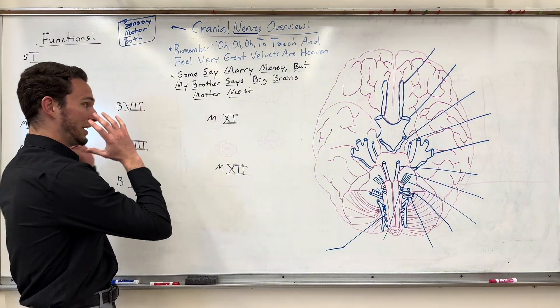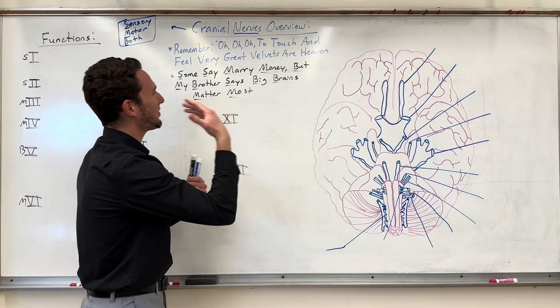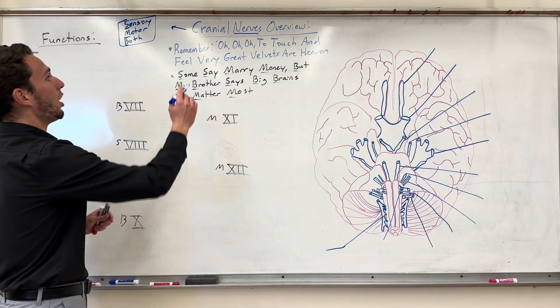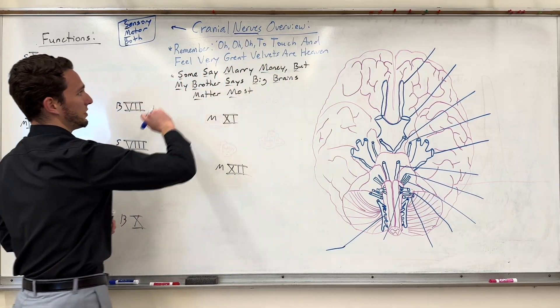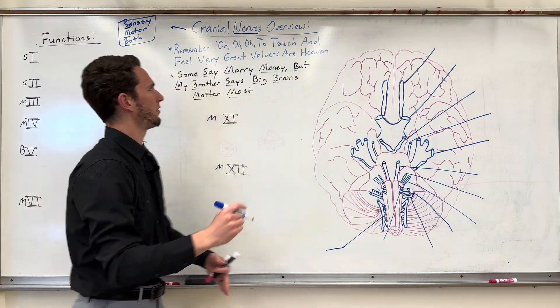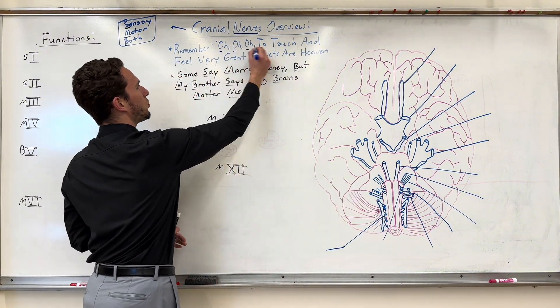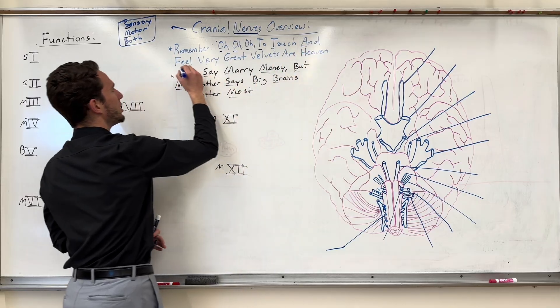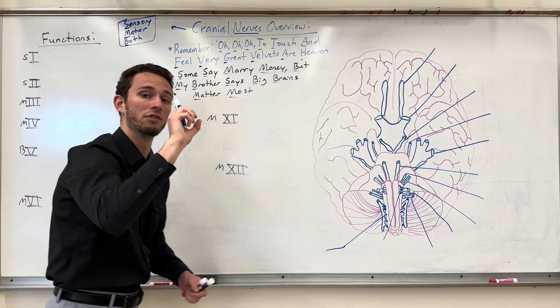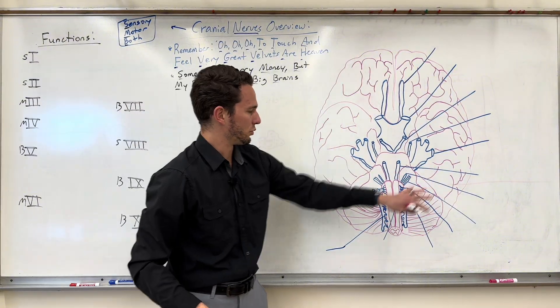Now we got the numbers, we got what they do. But what about the names? Well, I'm glad you asked. We've got another mnemonic here: O, O, O, to touch and feel very great velvets are heaven. Again, the first letter of each one is going to correspond to each of the 12 cranial nerves, first letter of the name.